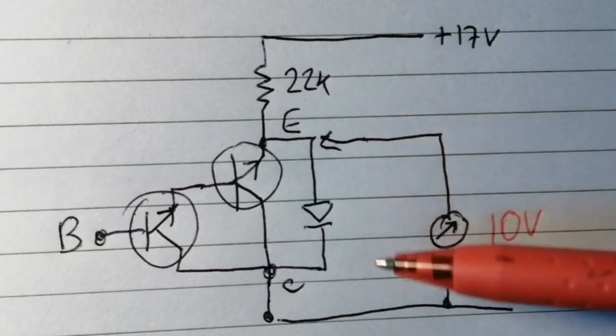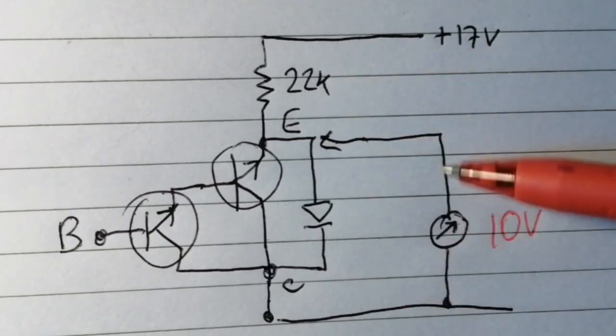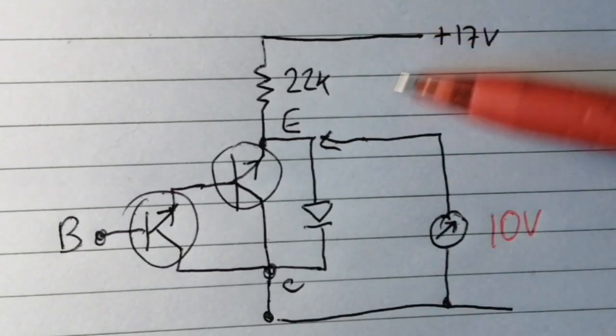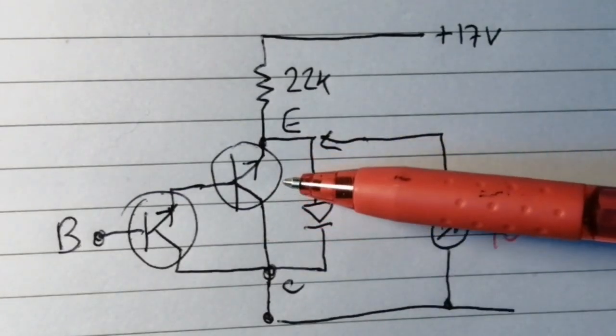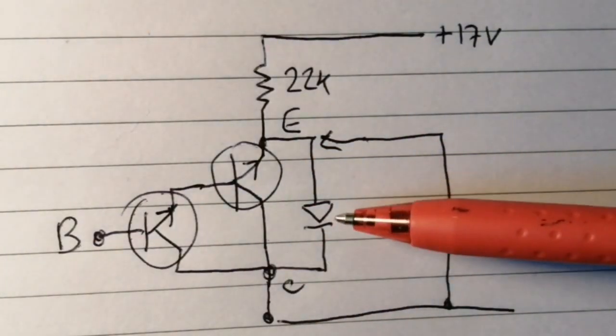So it must be leakage. But why isn't that at 17V? It suggests that this junction in reverse is quite leaky, but it's not a diode.